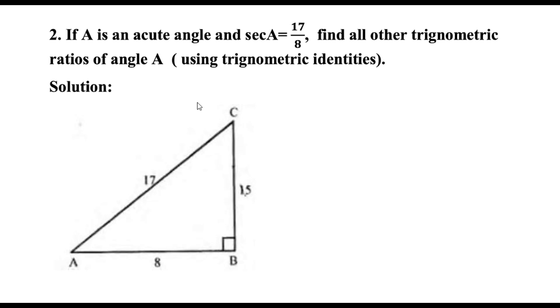If A is an acute angle and sec A is equal to 17 by 8, find all other trigonometric ratios of angle A. To solve these types of problems, first draw a triangle and put the value of sec A.